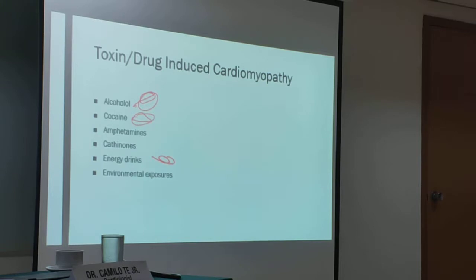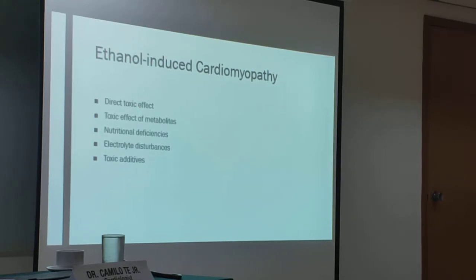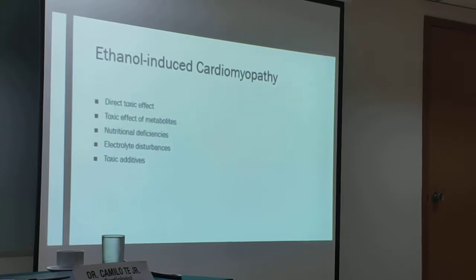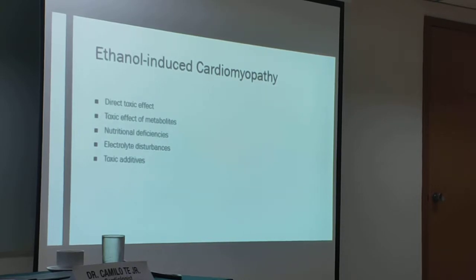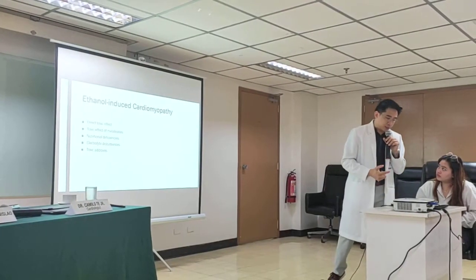When talking about ethanol-induced cardiomyopathy, alcohol has a direct toxic effect on the heart. Aside from that, alcohol is processed through the liver and produces toxic catabolites that also negatively affect the heart. When we drink, we urinate a lot, leading to electrolyte abnormalities. There can also be nutritional deficiencies because alcohol affects the absorption of normal daily nutrients. There are also toxic additives in alcohol that can affect the heart.